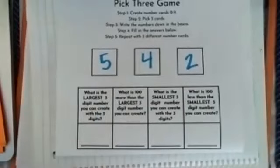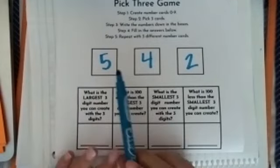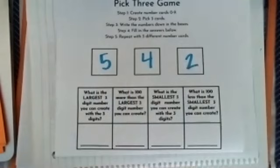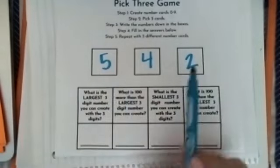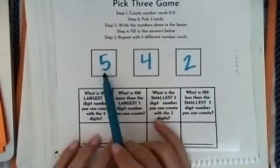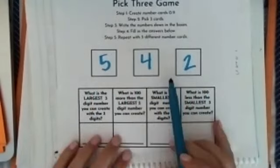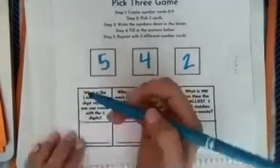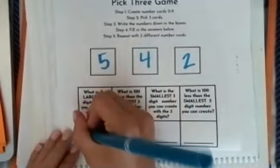The first question says, what is the largest three-digit number you can create with the three digits you picked? So I'm looking for the largest. I know when I think of the largest, I have to think of the bigger number. So my first number in my hundreds place needs to be the biggest number. What is my biggest number? Five, four, or two? I know five is my biggest number, so that's the number I'll put in my hundreds place.